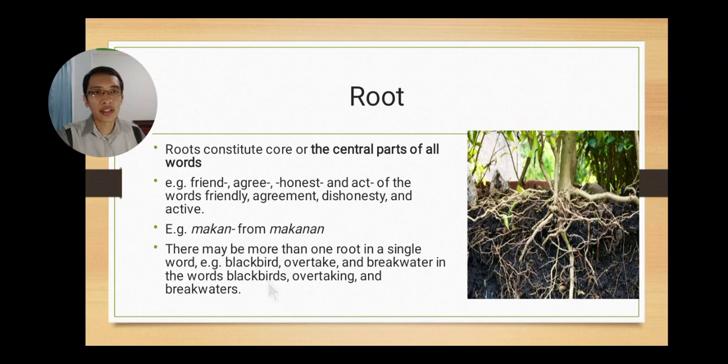Blackbirds here are actually developed from three things. The first is we have black, we have bird, and we have -s. Black here is a root, bird is a root, and -s is an addition or suffix. There are two roots inside this word.